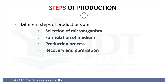Coming to the steps of production of glutamic acid by fermentation process: the first one is selection of microorganisms, then formulation of the medium required for inoculum preparation as well as production of glutamic acid, then the production process discussing different fermentation conditions, and finally recovery and purification.